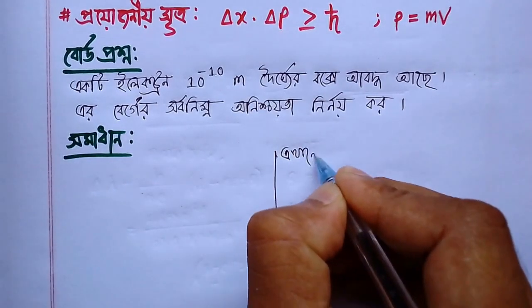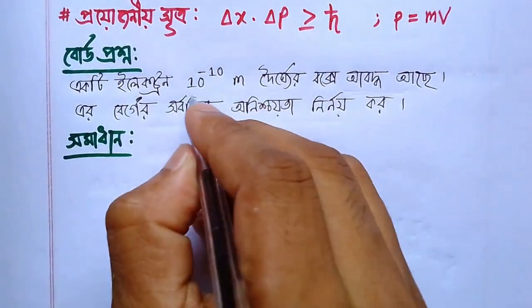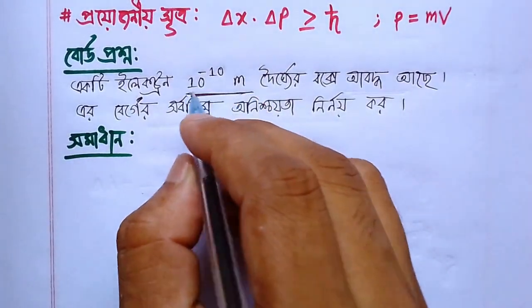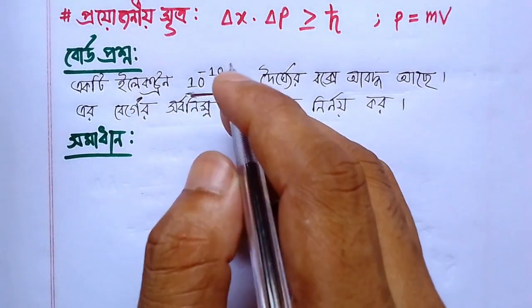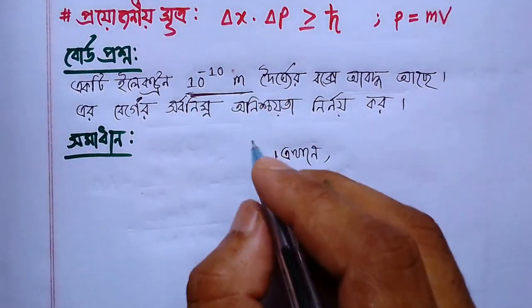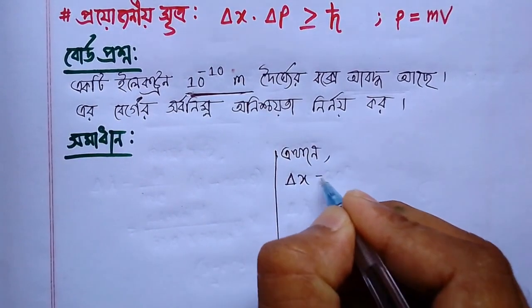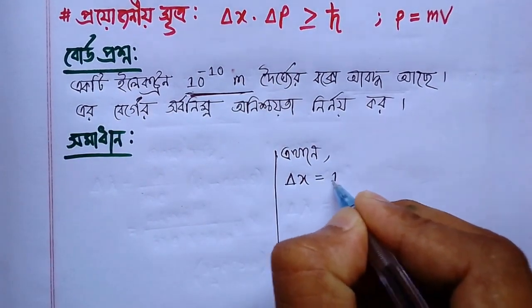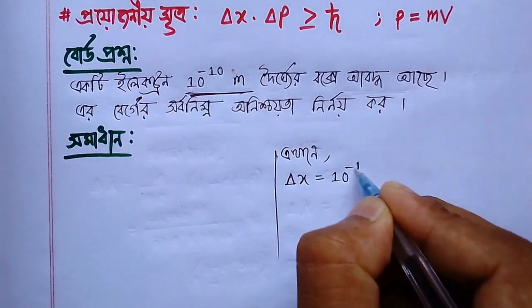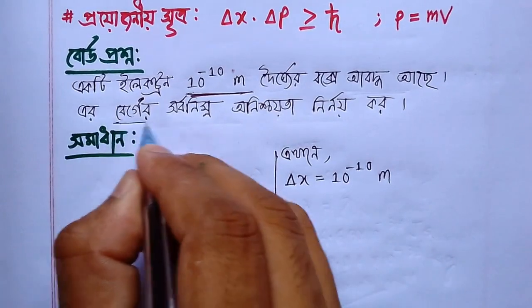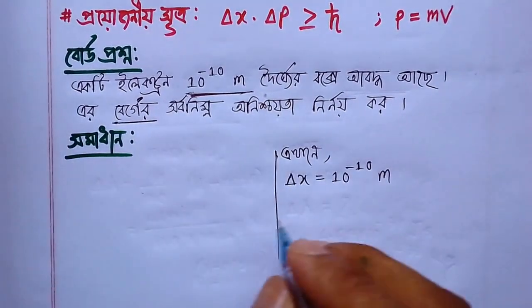What is the answer? It is 1.21 times 10 to the power 2 minus 1. So, this is the answer.